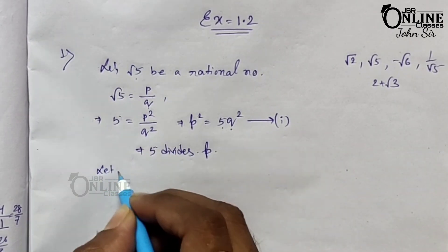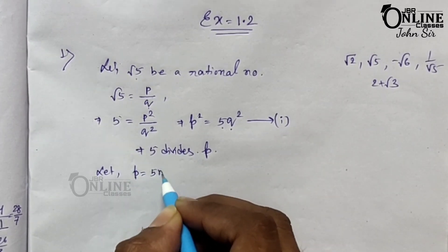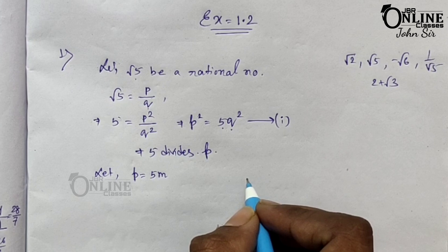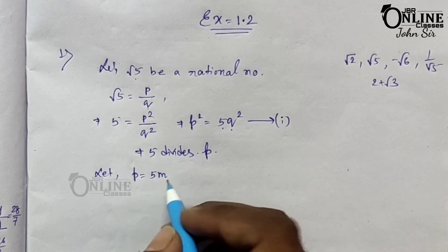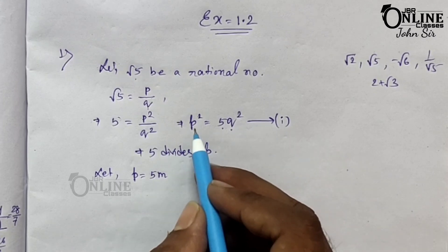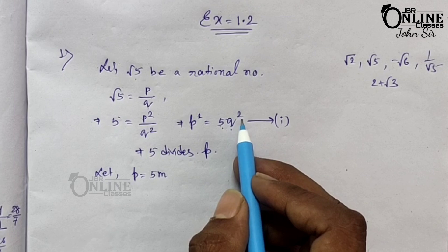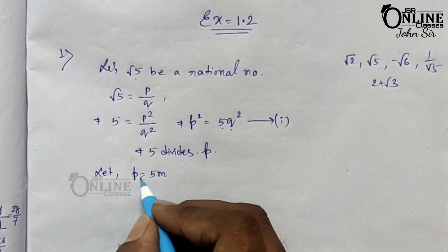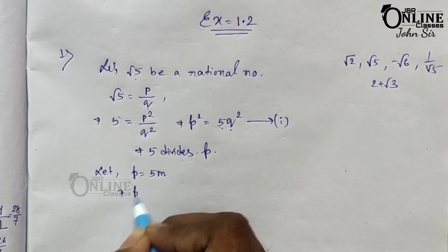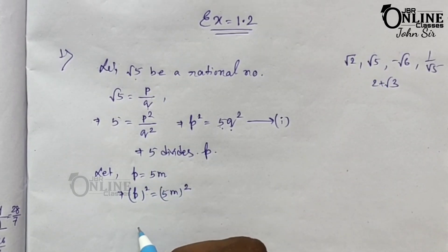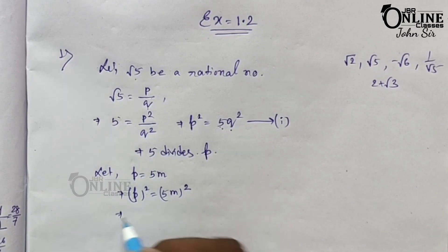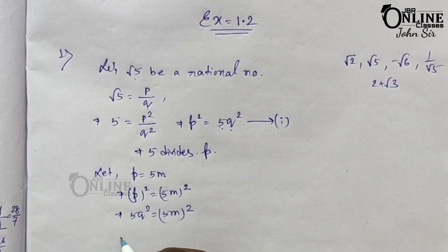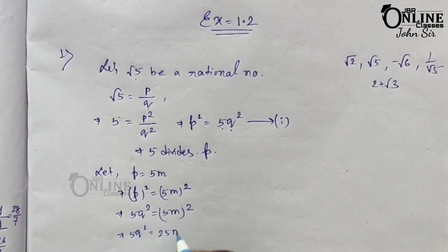Let p = 5m, where m is an integer. Now substituting the value of p into equation 1, p² = 5q² becomes (5m)² = 5q², so 5q² = 25m², which gives us q² = 5m².